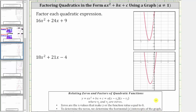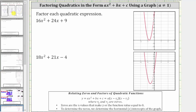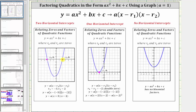When graphing a quadratic function on the coordinate plane, there are three possibilities. We can have two horizontal intercepts, which gives us two distinct binomial factors. Or we can have one horizontal intercept, where the graph touches the horizontal axis and then bounces back. In this case, we have a double zero, where we let r sub one and r sub two equal the zero, which gives us two of the same binomial factors. In the third case, there are no horizontal intercepts, and therefore no binomial factors of ax squared plus bx plus c.